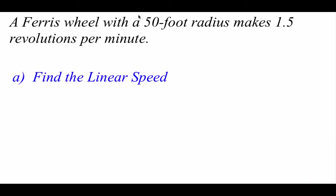In this example, we're looking at a Ferris wheel that's got a 50 foot radius. It's going to make one and a half revolutions per minute. The very first thing we're going to do is figure out the linear speed. So that's our formula that goes v equals s over t. Now, in order to use this formula, we have to first figure out what that s value is. So our arc length, remember we go r times theta.